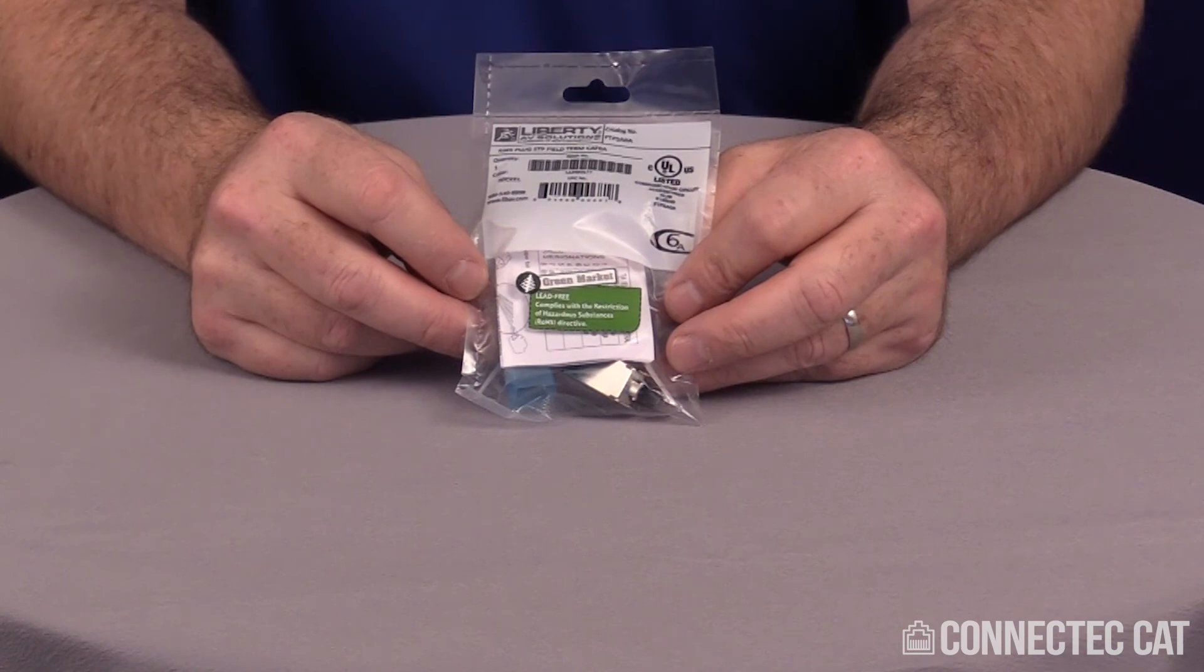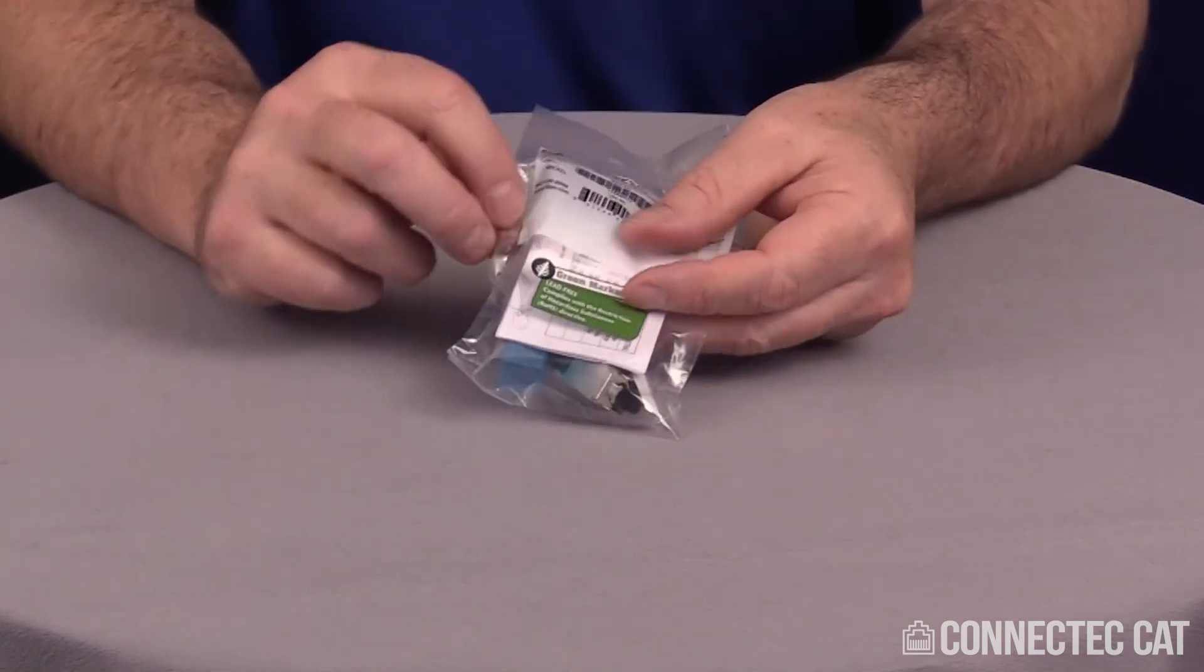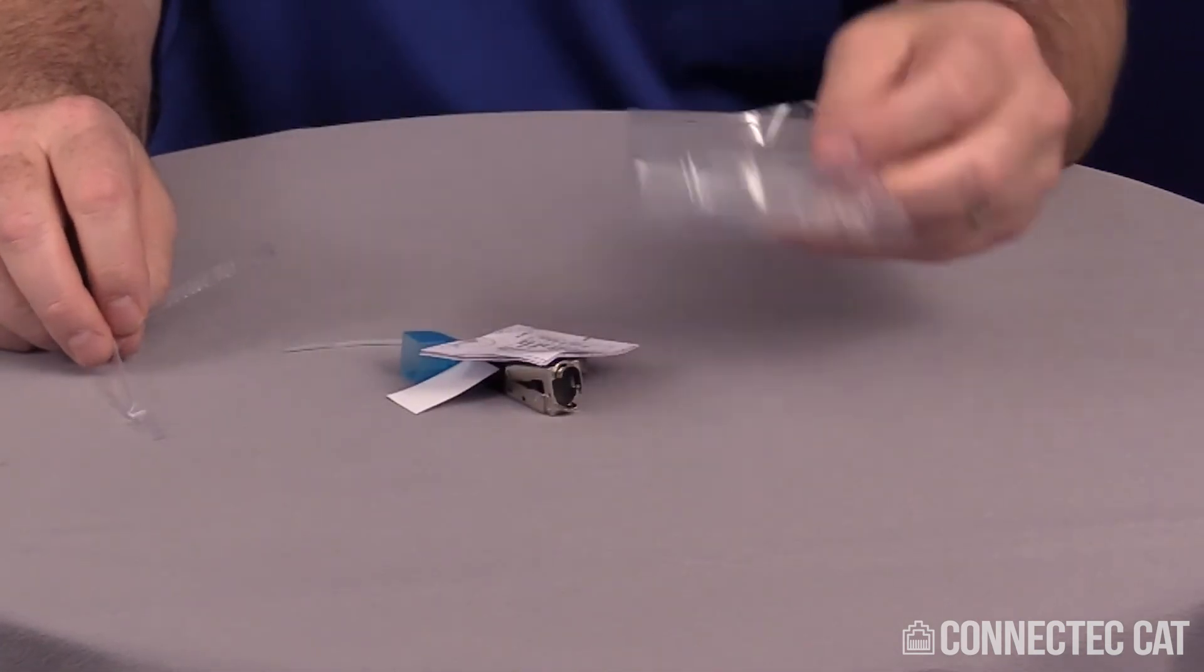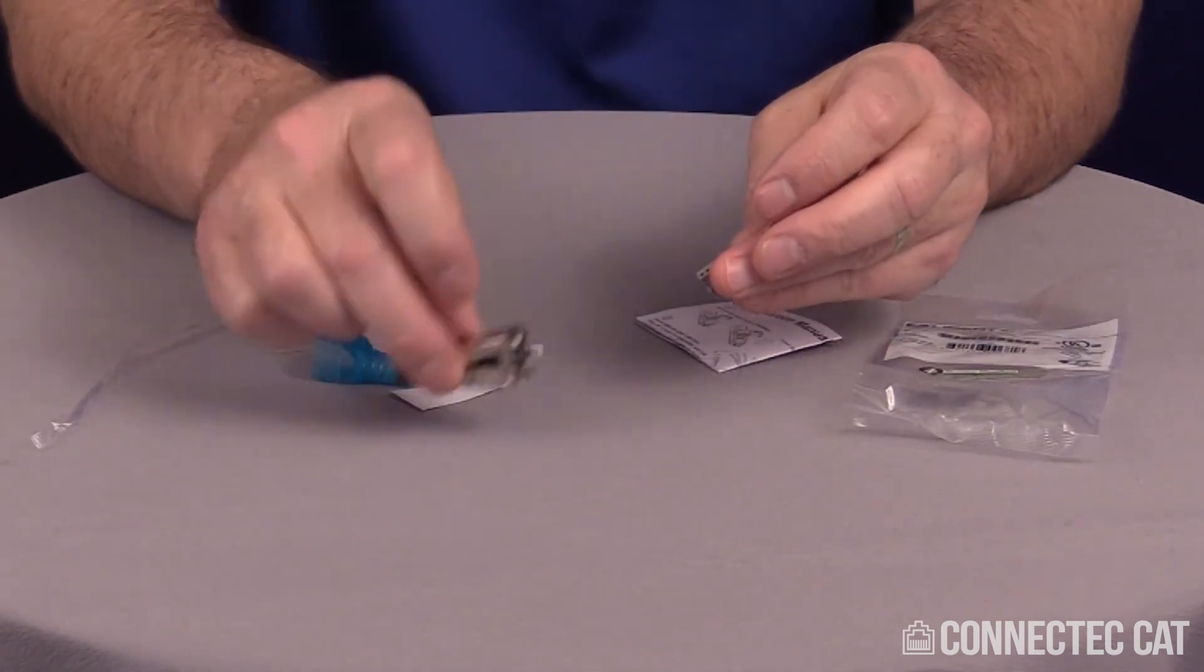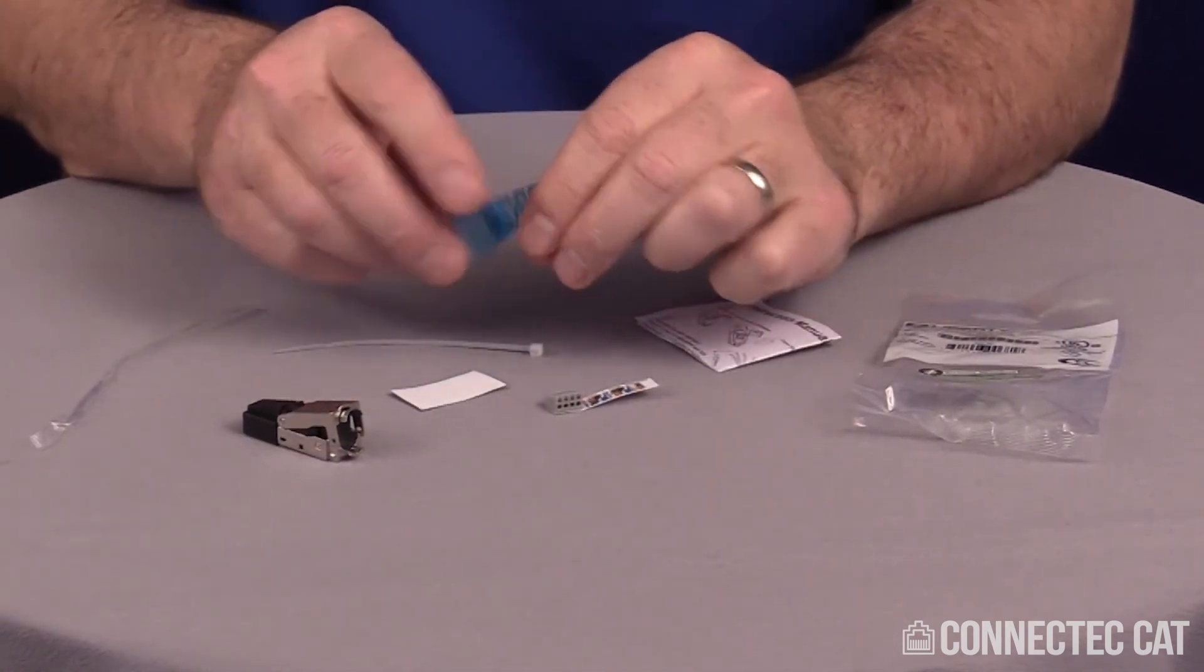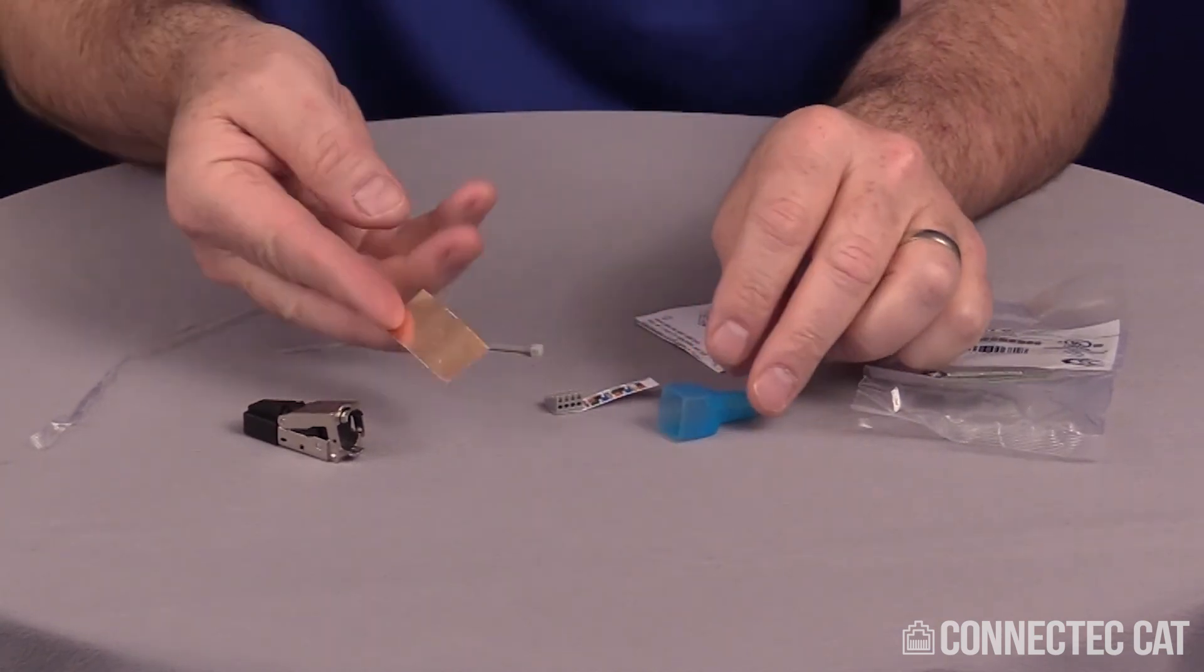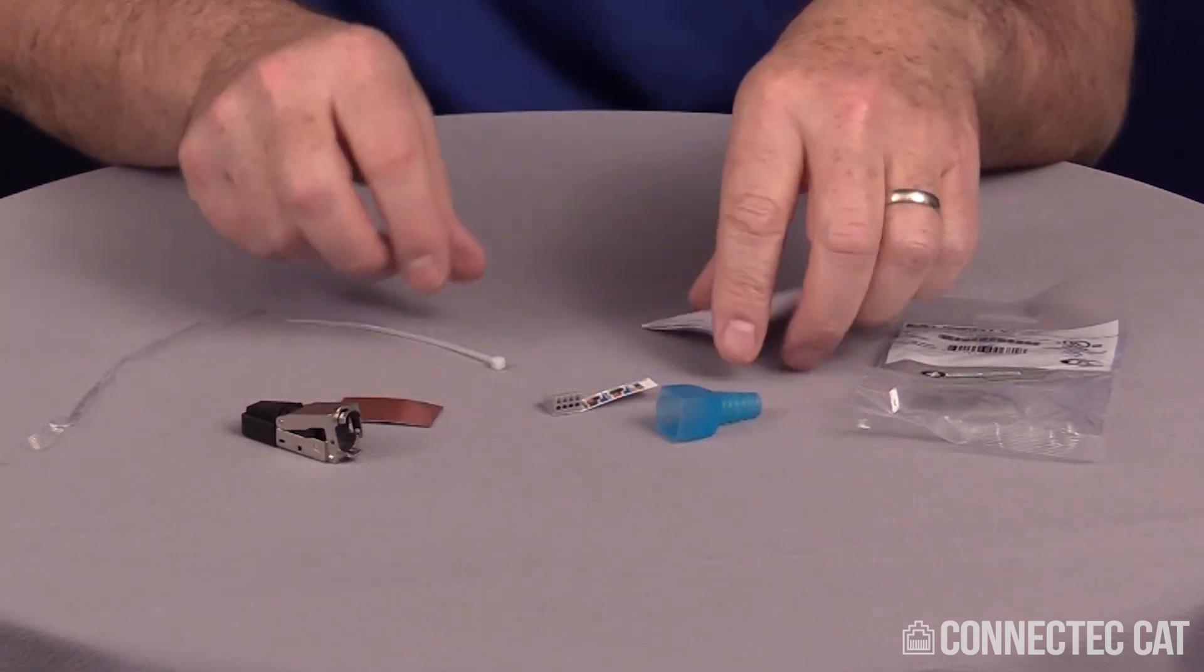When you get your connector, it'll be individually packaged, have a little zip peel off on the side and you can dump all your contents. You're going to have in here a connector body, a load bar, a cable boot, a piece of copper tape, a twist tie, and the instructions.